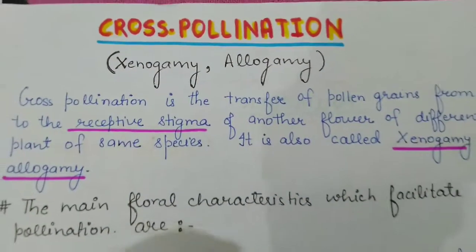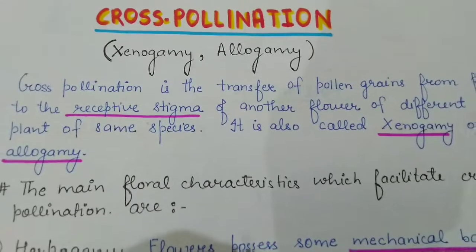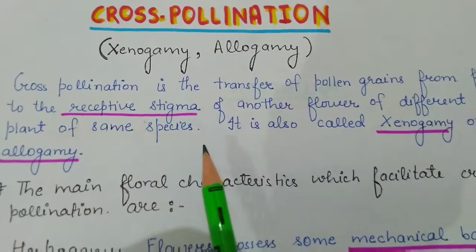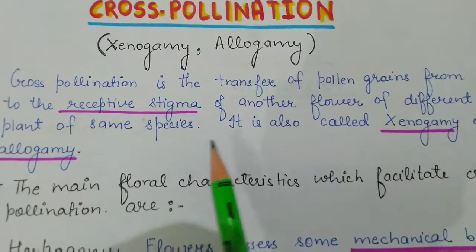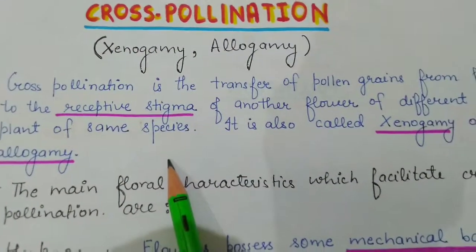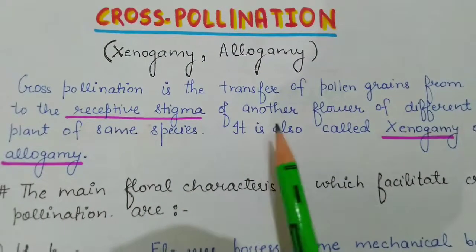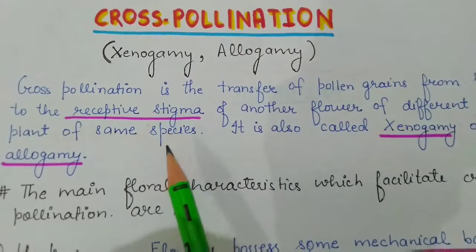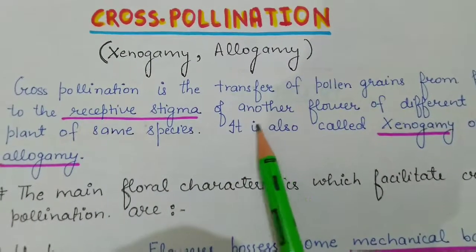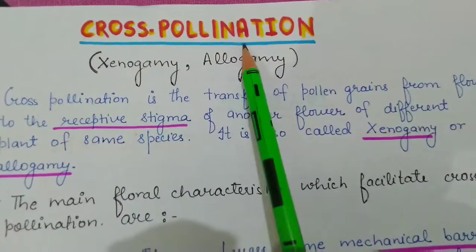A very basic example that can be given is papaya. In papaya, the female plant is different from the male plant. So the two plants are male and female, same species, and the flowers are male and female flowers. There will be transfer of pollen grains from the anther to the receptive stigma of the female flower. This is called cross pollination.